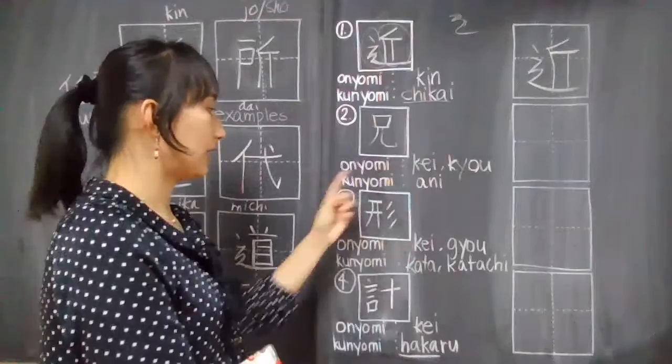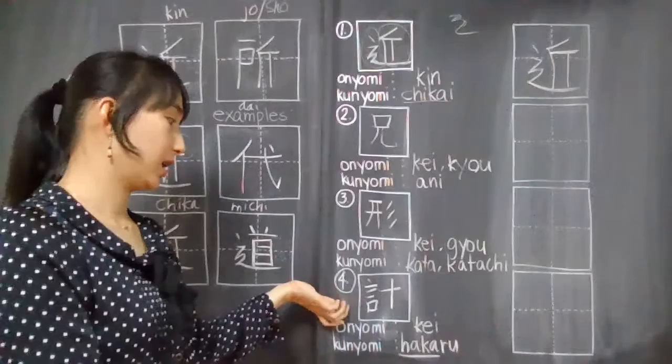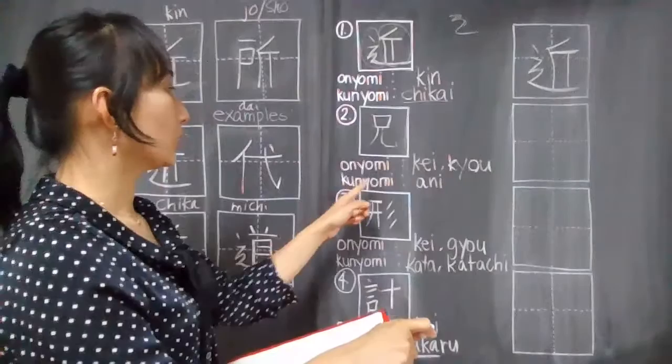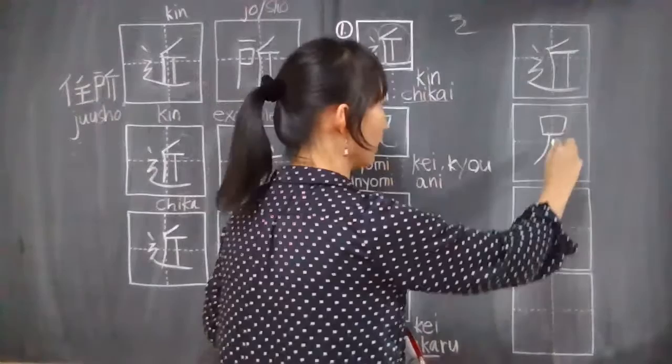Then this one, kei. When you see this, it's somewhat related to measuring something or plan. This kanji, let's start with this kanji. Its onyomi is kei and kyo, and its kunyomi is ani or older brother. For this kanji, there are five strokes. One, two, three, four, and then five, just like there's kind of like a tail.